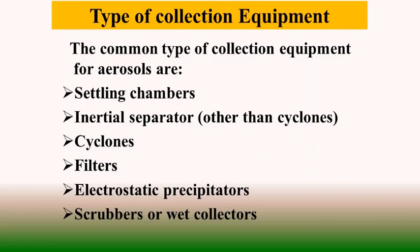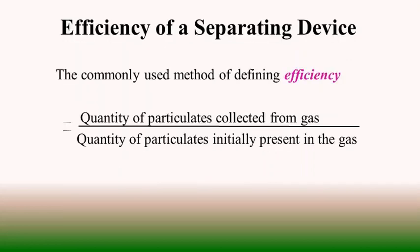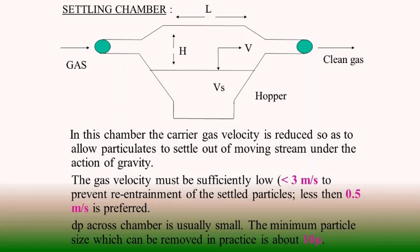The common types of collection equipment used for separating dust from the exhaust gas are basically settling chambers, inertial separators other than cyclones, cyclones, filters, electrostatic precipitators, and scrubbers or wet collectors. The efficiency of the dust control equipment is measured by the quantity of particulate matter collected from the dust-laden gas flowing through the equipment, with respect to the quantity of particulates initially present in the gas entering the control device.